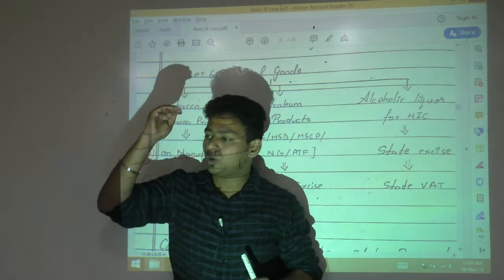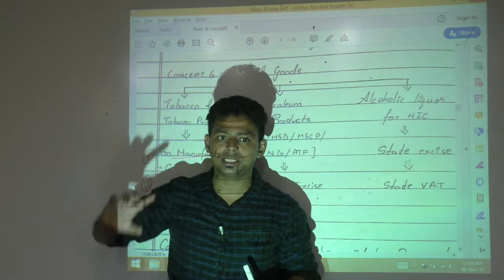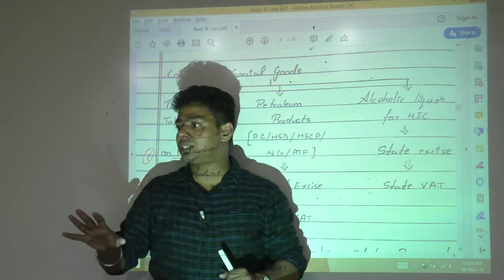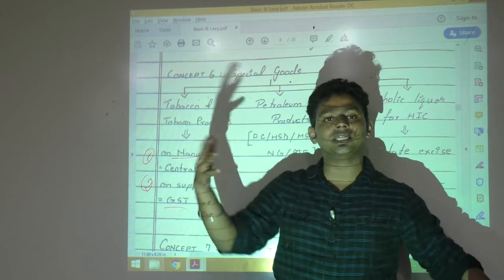On tobacco, manufacture, central excise. Supply, GST. Am I clear? Petrol, there is no GST. Why? Because on manufacture, central excise. On sale, state VAT.